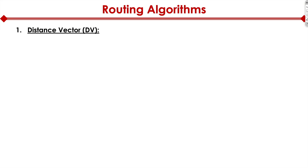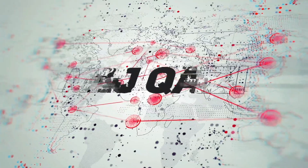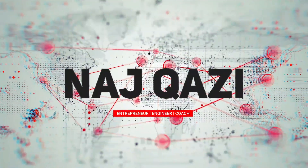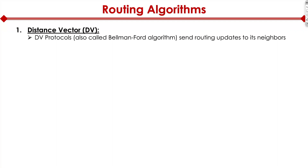There are different types of routing algorithms. First, distance vector. Distance vector protocols are also called the Bellman-Ford algorithm, named after their inventors. They send routing updates to their neighbors.